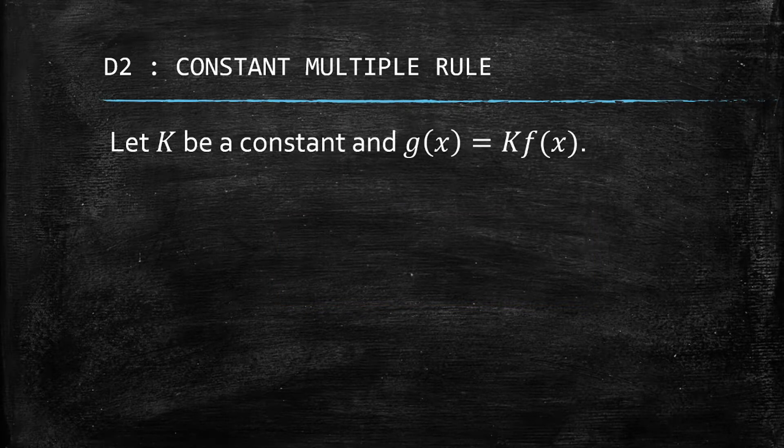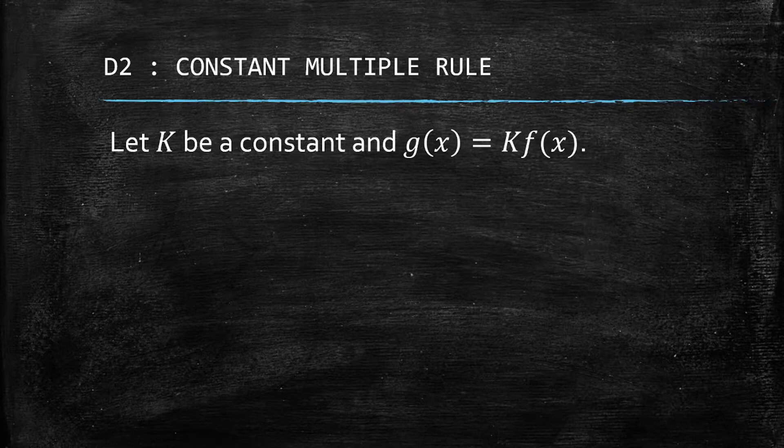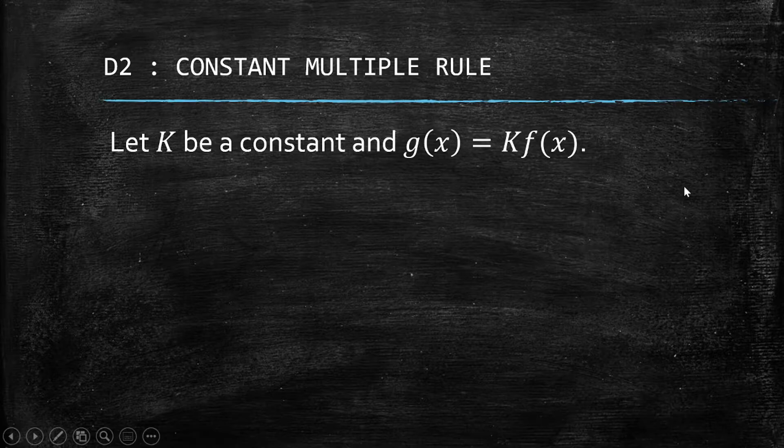Let K be a constant and g(x) = Kf(x). So we start with having a function g(x) equal to K times a function f(x).